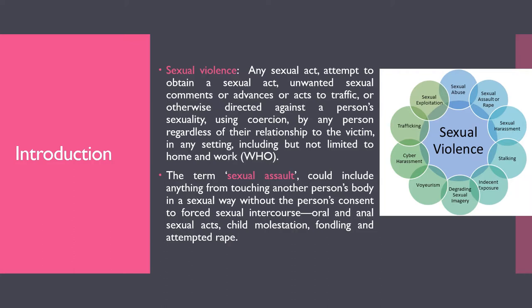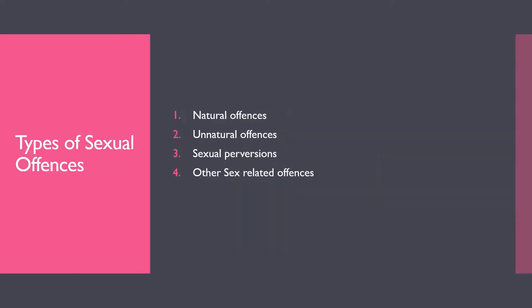A sexual offense need not involve intercourse — it can be a verbal act as well. Sexual assault could include anything from touching another person's body in a sexual way without their consent, to forced sexual intercourse — either oral or anal — child molestation, fondling, or attempted rape. The victim can report such acts to the police. Two basic terms to understand: sexual offense and sexual assault.